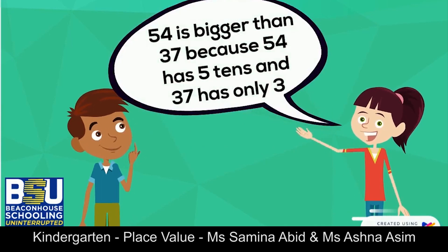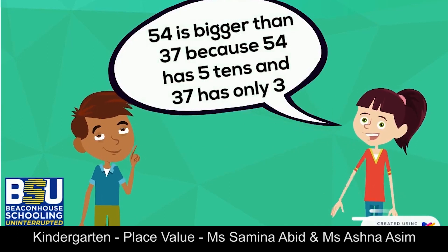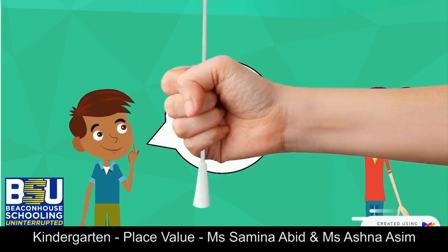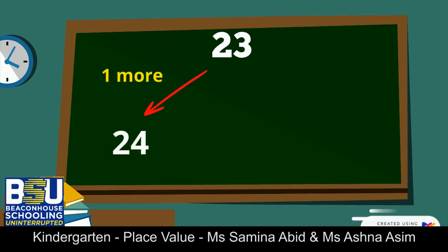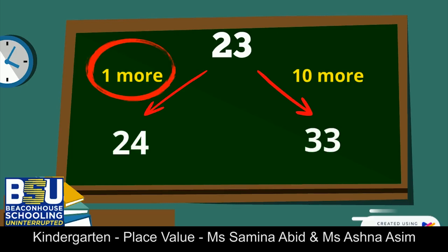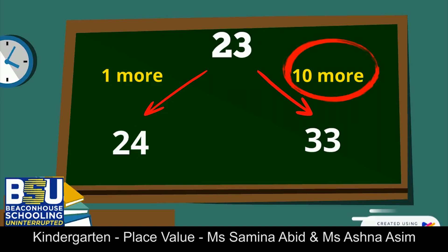Look at the number 23. One more than 23 will be 24, and 10 more than 23 will be 33. When we add one more to 23, the digit in the ones place changes from three to four. When we add 10 more to 23, the digit in the tens place changes from two to three.